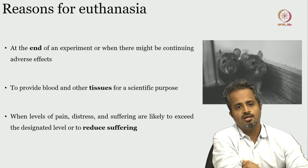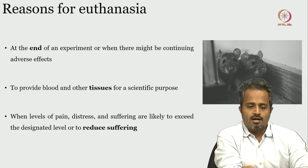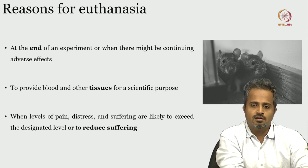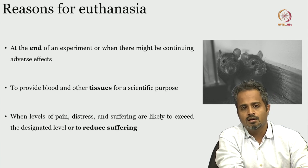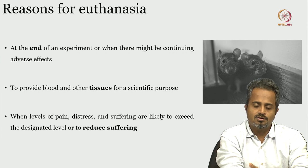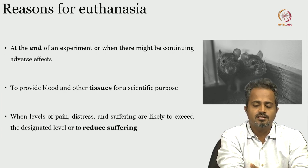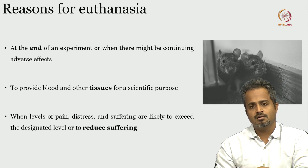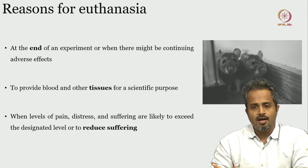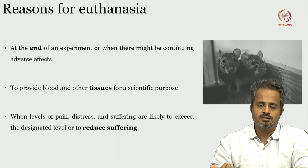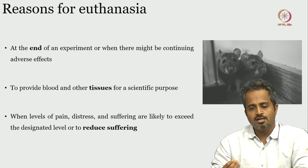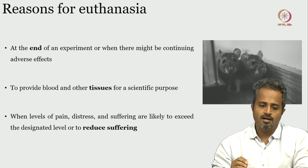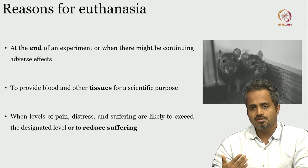What are the reasons why you need to do euthanasia? At the end of the experiment, or where there might be continuing adverse effects, animals are generally euthanized and not let alone to survive. This is because you are using the animal for a particular experiment which can involve various harmful agents and chemicals under study, which can harm other animals or even research personnel. It is very important to euthanize the rat at the end of the study. Generally, small animals are not let alone to survive.